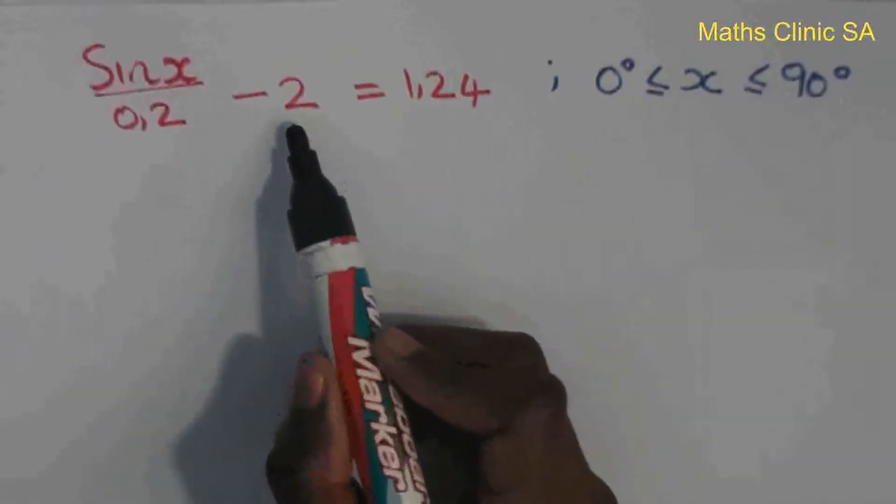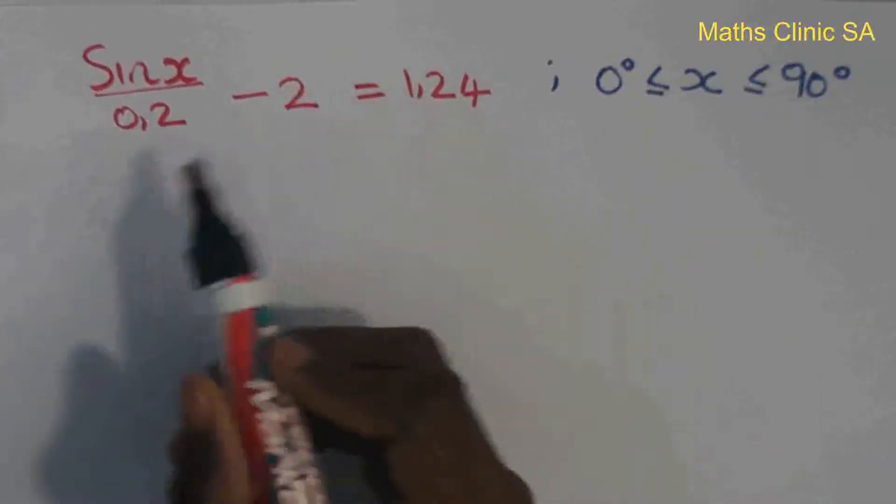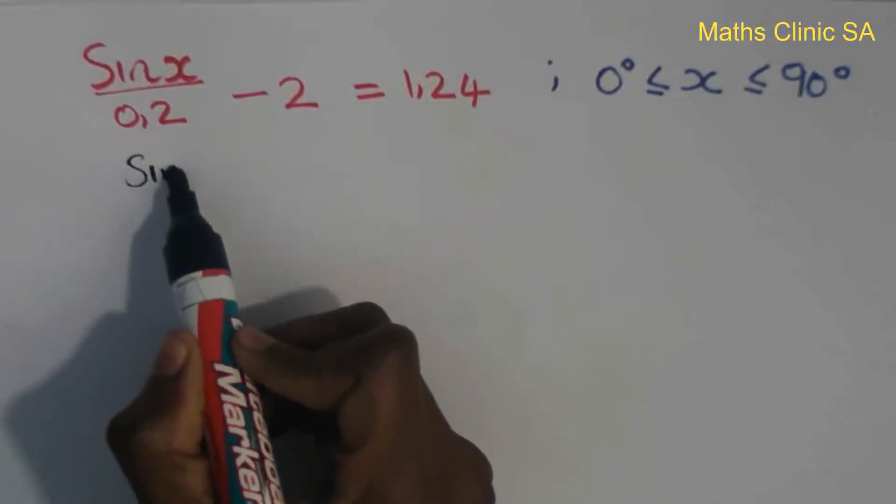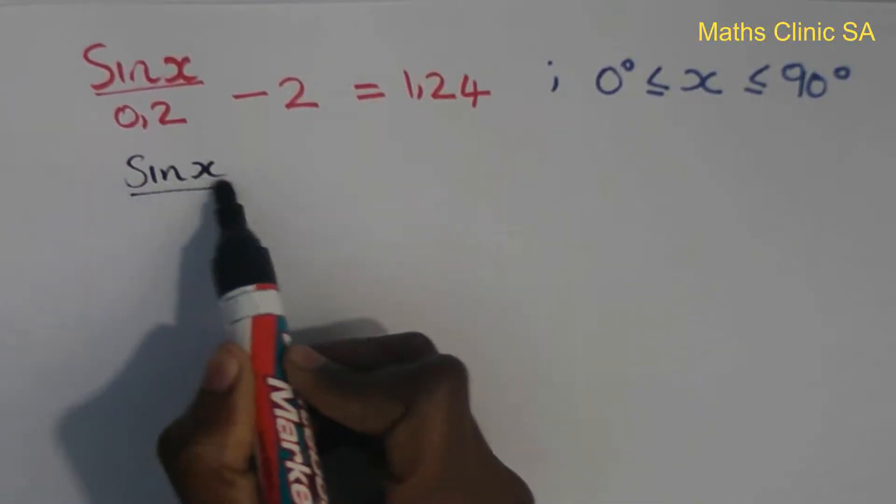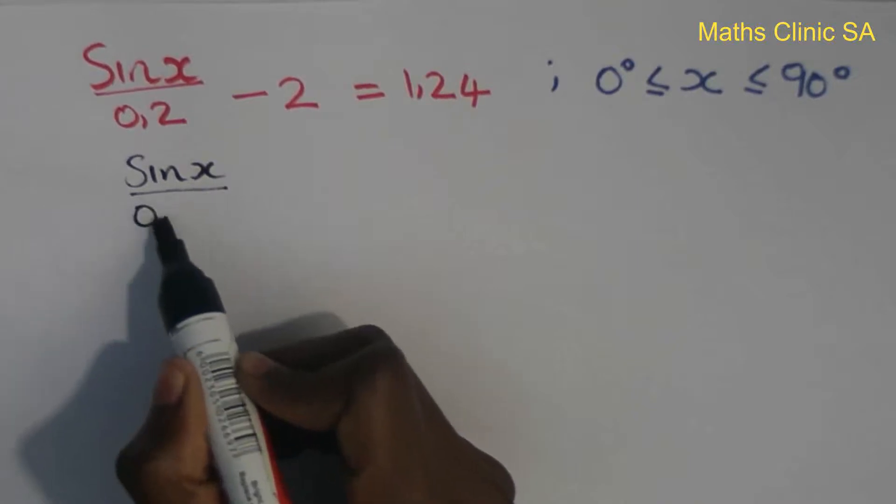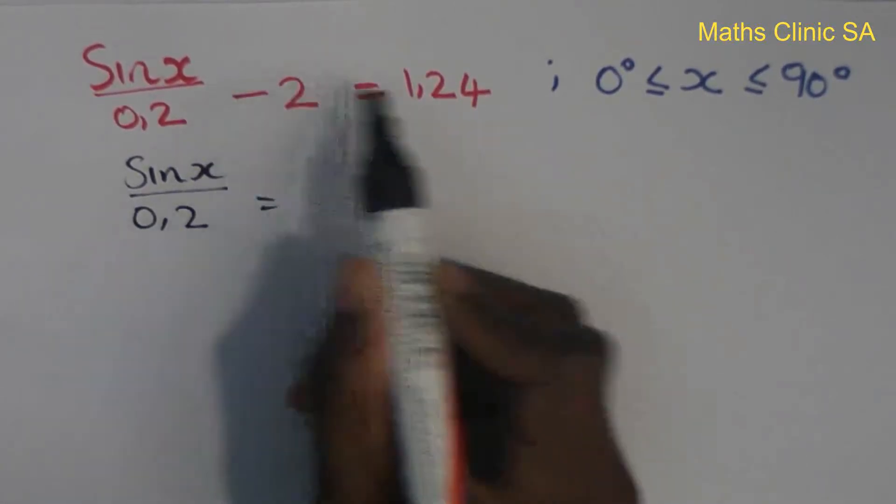Alright, so I'm going to add 2 to both sides. This gives sine of x divided by 0.2 equals 3.24.